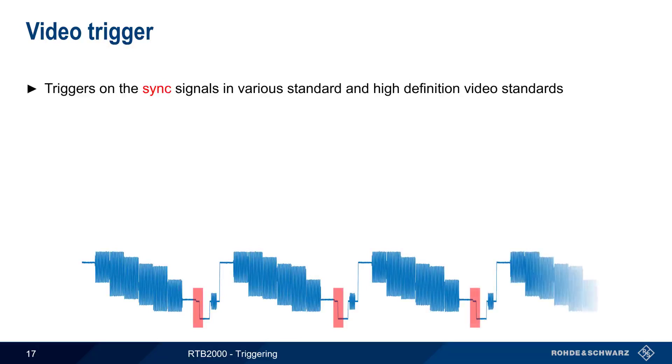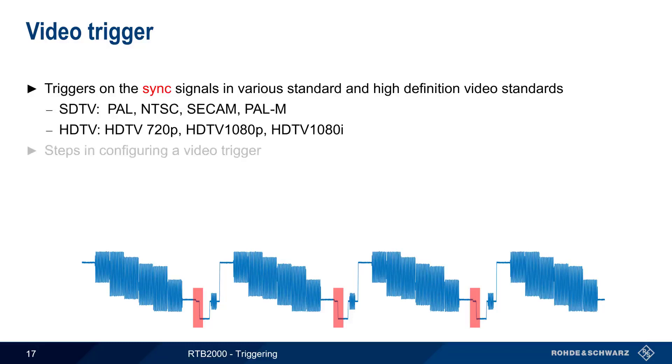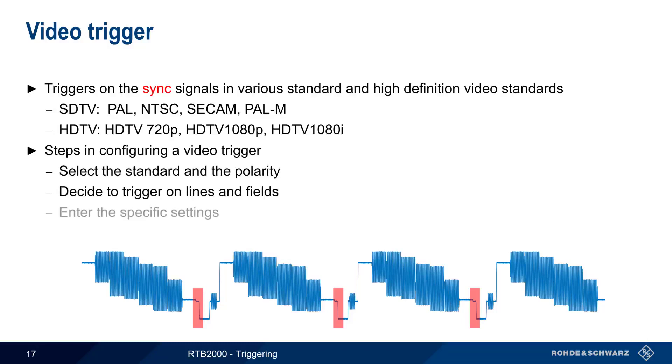Another somewhat less common trigger type is the video trigger. This type of trigger starts an acquisition on the sync signals or pulses, here shown in red, that are used to mark the start of each scan line in a video signal. The RTB supports a variety of both standard definition as well as high definition video formats. We won't be going into detail on these formats in this presentation. To configure a video trigger, three steps are required: selecting a video standard and the polarity, deciding which lines or fields to trigger on, and entering any specific settings. Let's take a look at an example.